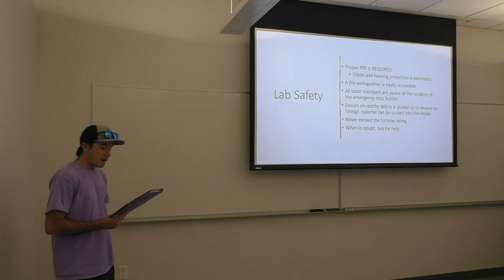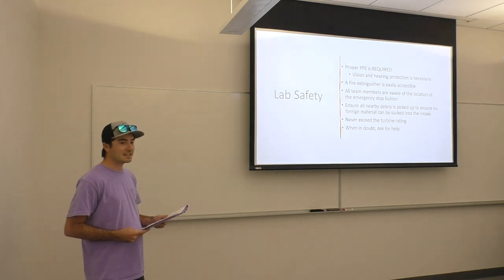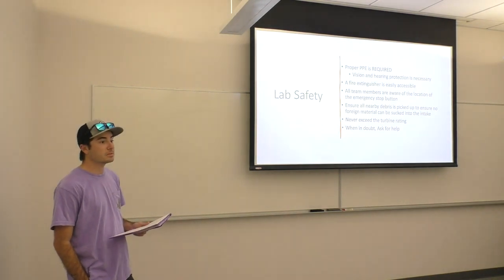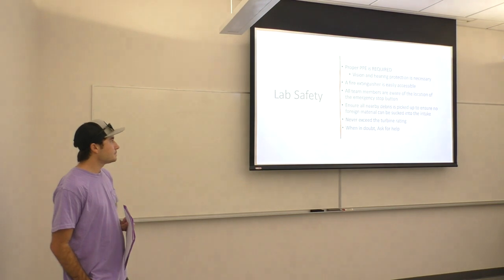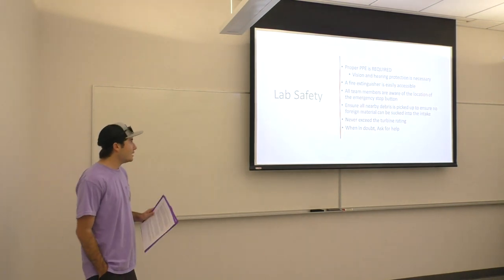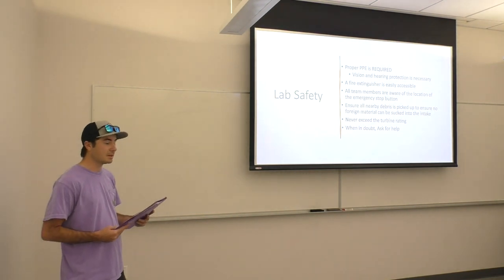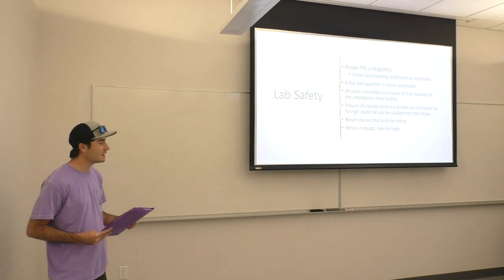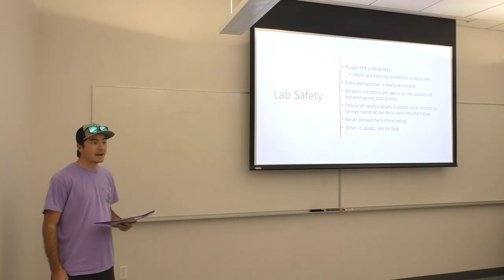Lab safety is crucial — this is arguably the most dangerous lab we'll take as mechanical engineers. Proper PPE is required: hearing protection and vision protection. A fire extinguisher must be nearby, and a team member should know how to use it in an emergency. All team members need to know what the emergency stop button looks like and how to use it — it's a little red button, which I'll show you later. Ensure all nearby debris is cleared so nothing enters the turbine while it's running. Never exceed the turbine's rated speed. When in doubt, ask questions and ask for help.